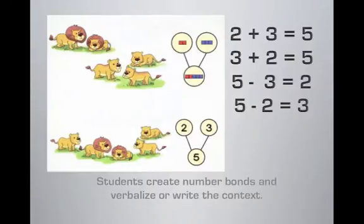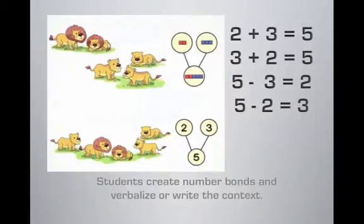Remember the power of context — that is when any of these strategies are most powerful, rather than working with naked numbers. Here, students were given a picture of two male lions and three female lions and they created a context and an equation. For example, they might say: there were two male lions, three female lions, five lions altogether — two plus three equals five.